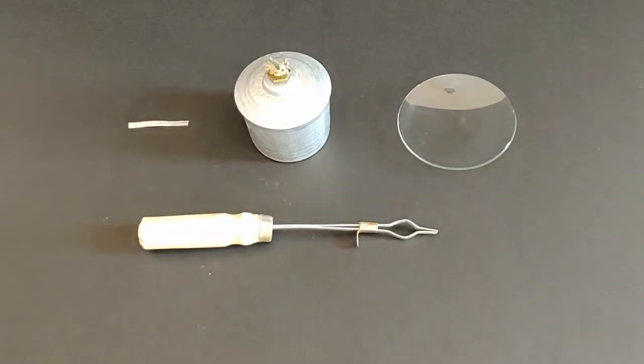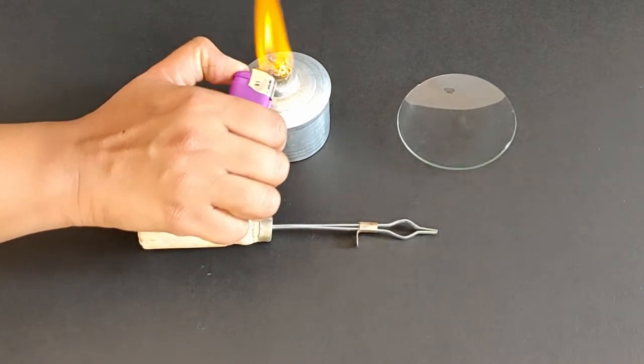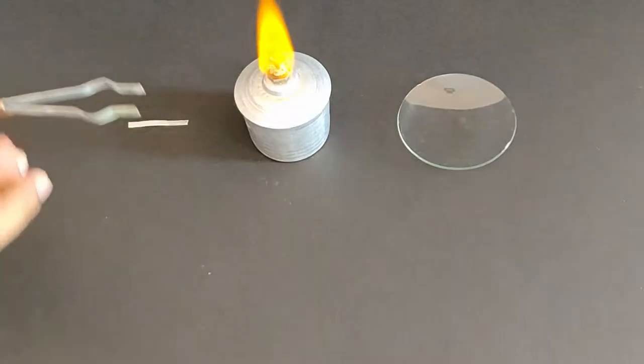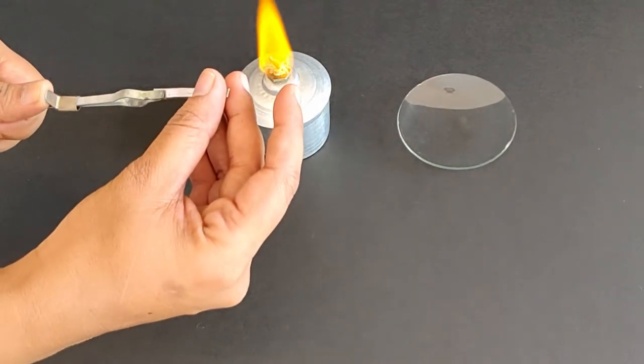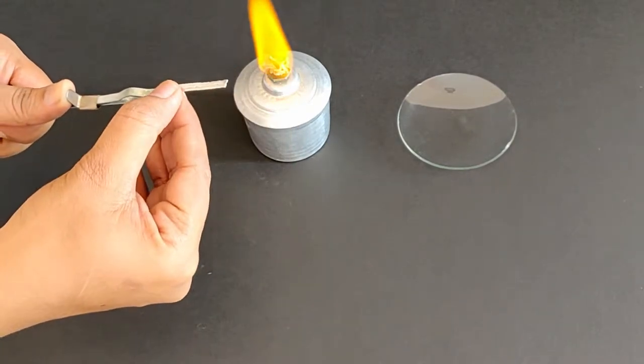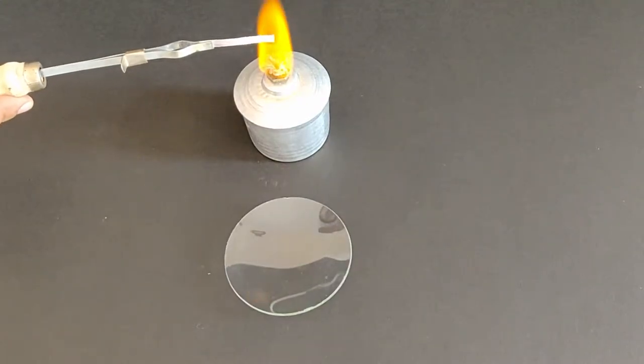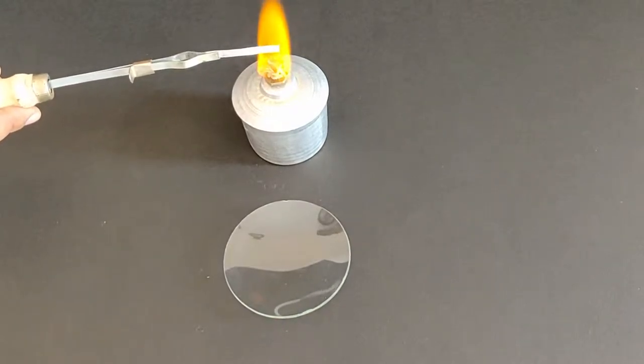Light the spirit lamp using a lighter or a matchstick. Secure the magnesium ribbon or strip to a test tube holder. Hold the ribbon over the flame till it catches fire.